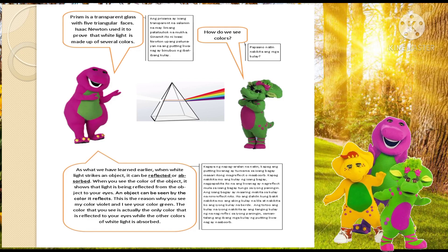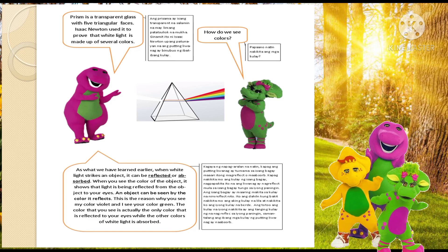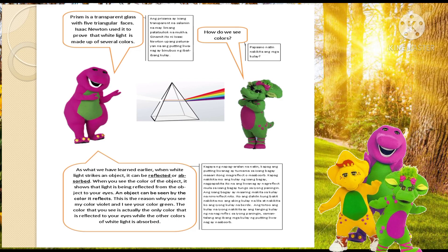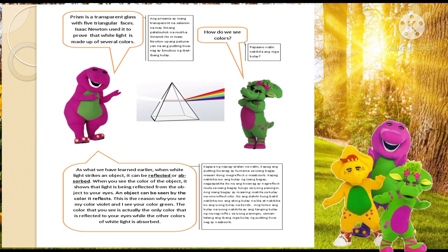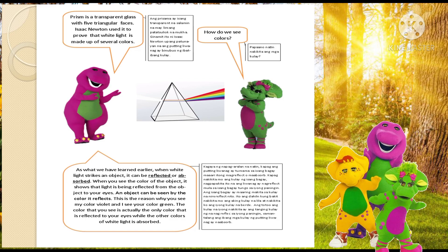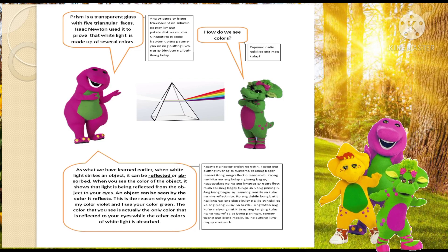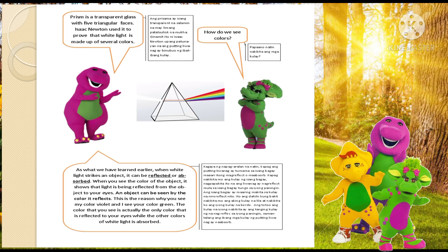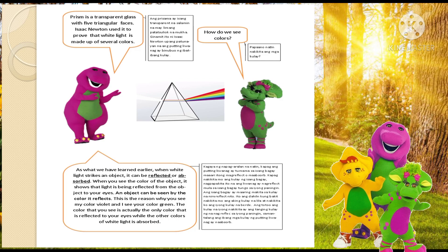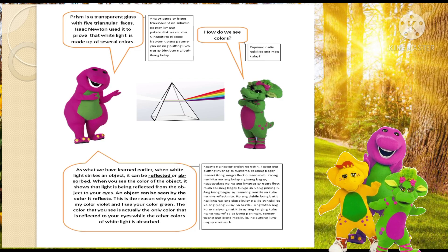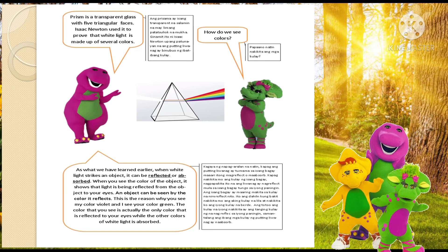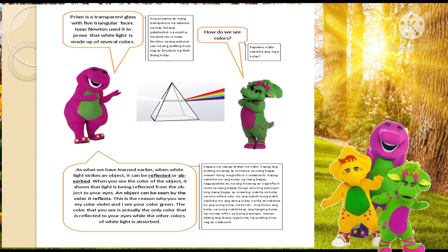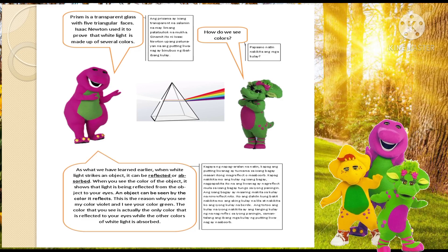How do we see colors? When white light strikes an object, it can be reflected or absorbed. When you see the color of an object, it shows that light is being reflected from the object to your eyes. An object can be seen by the color it reflects. The color that you see is actually the only color being reflected to your eyes, while the other colors of white light are absorbed.